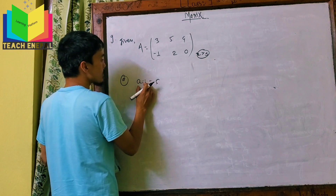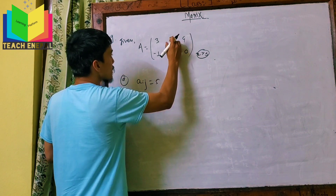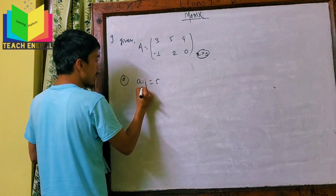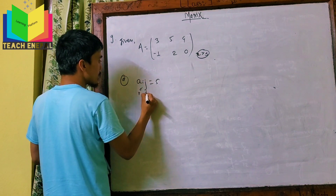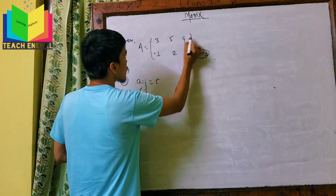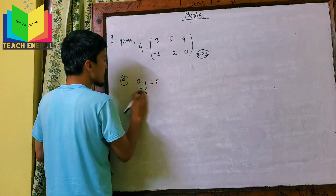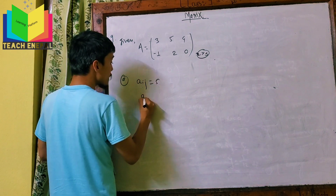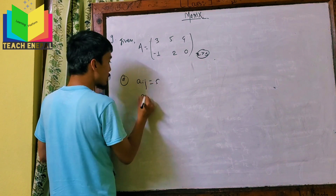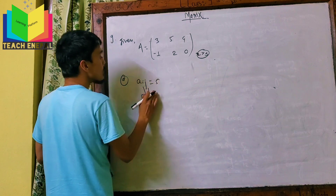How many elements are there? The element 5 is located in the first row, second column. Using double suffix notation, i corresponds to the row and j to the column. So i is equal to 1 and j is equal to 2, meaning the element 5 is at position first row, second column.